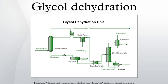Process Description: Lean, water-free glycol is fed to the top of an absorber where it is contacted with the wet natural gas stream. The glycol removes water from the natural gas by physical absorption and is carried out the bottom of the column. Upon exiting the absorber, the glycol stream is often referred to as rich glycol. The dry natural gas leaves the top of the absorption column and is fed either to a pipeline system or to a gas plant.